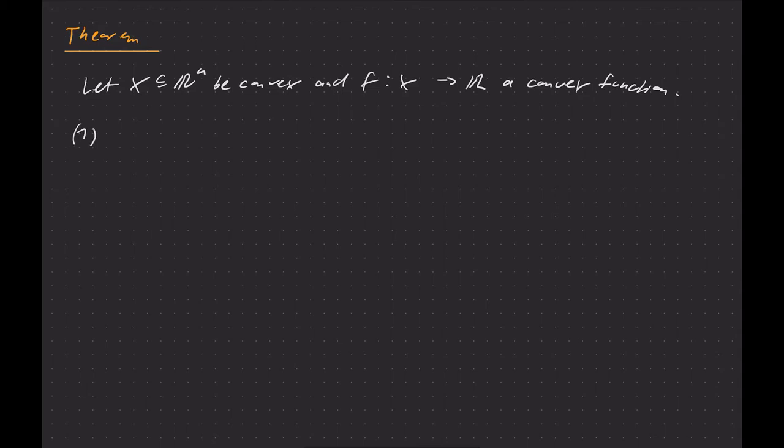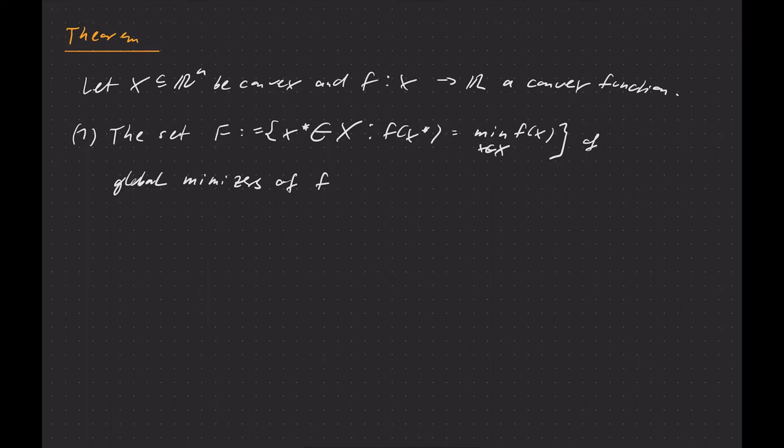Then the following are true. Number one, the set of global minimizers of f is also a convex set. So call that set capital F here. The global minimizers are those points x* ∈ X, where f(x*) is the minimum possible function value, so the minimum of all f(x), x ∈ X. All points where this minimum is assumed, that set of global minimizers of f is a convex set.